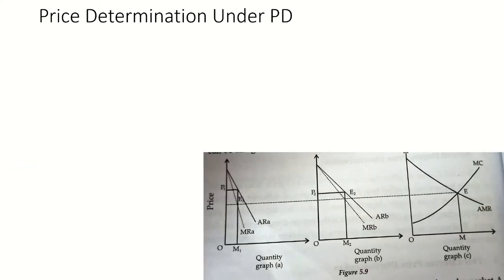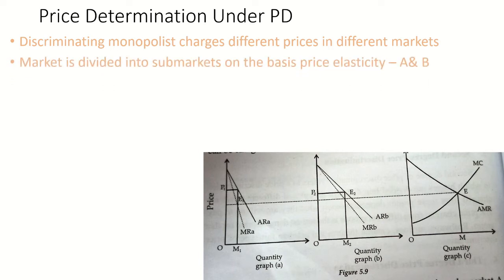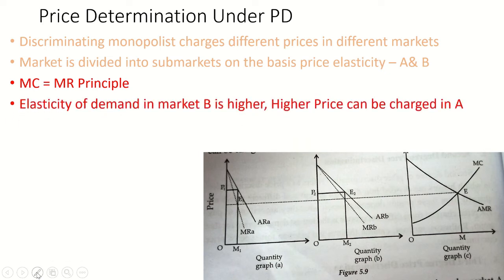Under price discrimination, the discriminating monopolist charges different prices in different markets — for example, five rupees in one market and ten rupees in another. To understand price determination, the market is divided into two sub-markets (A and B), represented by three graphs. The MC equals MR principle is used for price determination here as well.